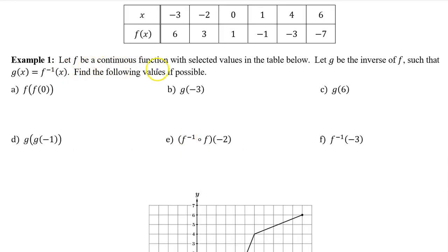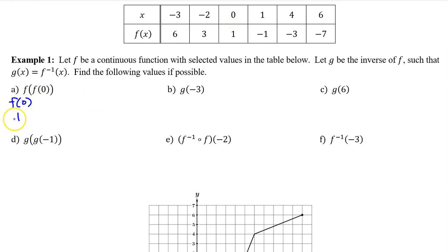Example one: let f be a continuous function with selected values in the table below. Let g be the inverse of f such that g of x equals f inverse of x. Find the following values if possible. Part A: for this notation, we work from the inside out. So we begin with f at zero. f at zero is one. Moving outward, we get to the second f. Now we evaluate f at one. f at one is negative one. So that's the answer to part A.